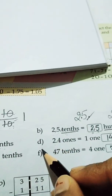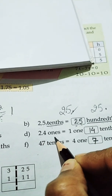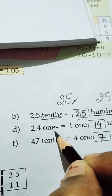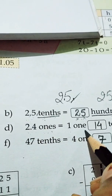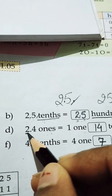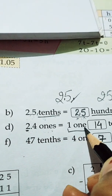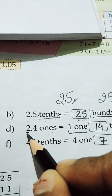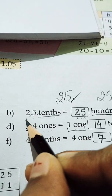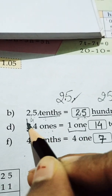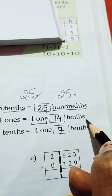In D part, we have 2.4 ones. Here it is written as 1, 1. There are 2 ones, and we have already written 1, so 1 remains. That gives us 1.4, which is also 14 tenths.